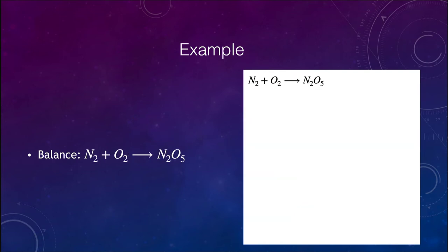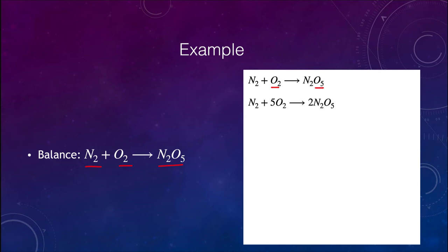Let's balance N2 plus O2 yields N2O5. Nitrogen is balanced, but oxygen is not. We're going to have to get the oxygens balanced, which means temporarily unbalancing nitrogen and then bringing it back into balance afterwards. To balance oxygens: we have five on the right side and two on the left. Since two and five are not even multiples of each other, we can make five O2 molecules on the left giving us ten oxygens, and two N2O5 molecules on the right also giving us ten oxygens. So oxygen is now balanced with ten atoms on each side.